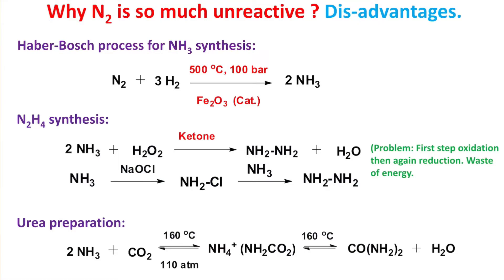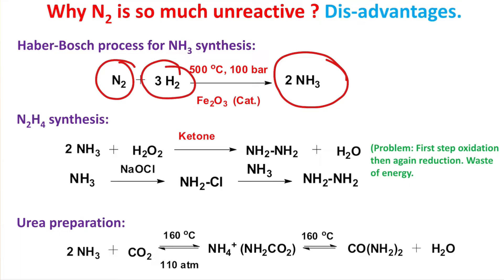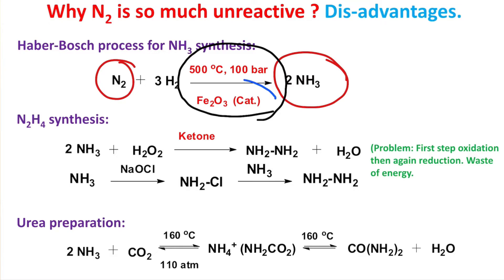The disadvantage of nitrogen's low reactivity is illustrated by the Haber-Bosch process, which produces ammonia from nitrogen and hydrogen. If you look closely, the conditions are 500°C and 100 bar — very drastic conditions — because you need to supply a huge amount of energy to break the nitrogen-nitrogen triple bond, along with a catalyst, Fe₂O₃.